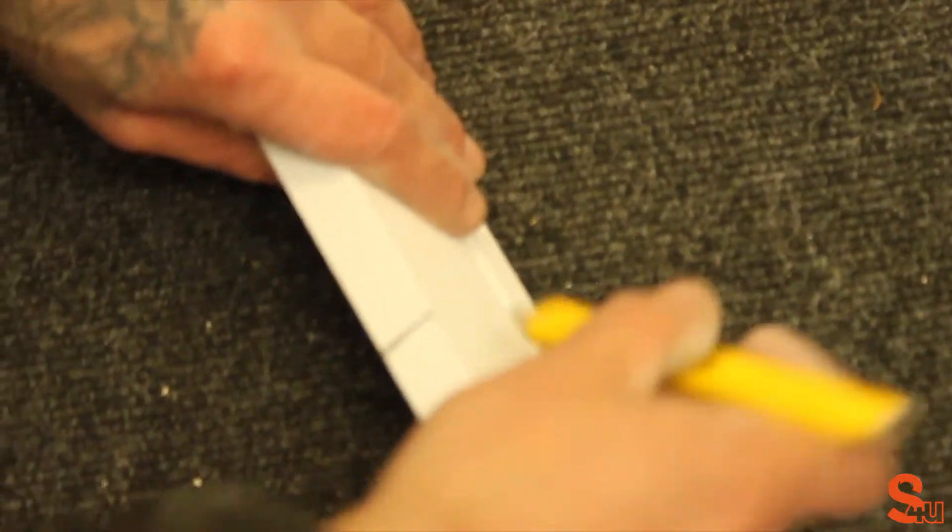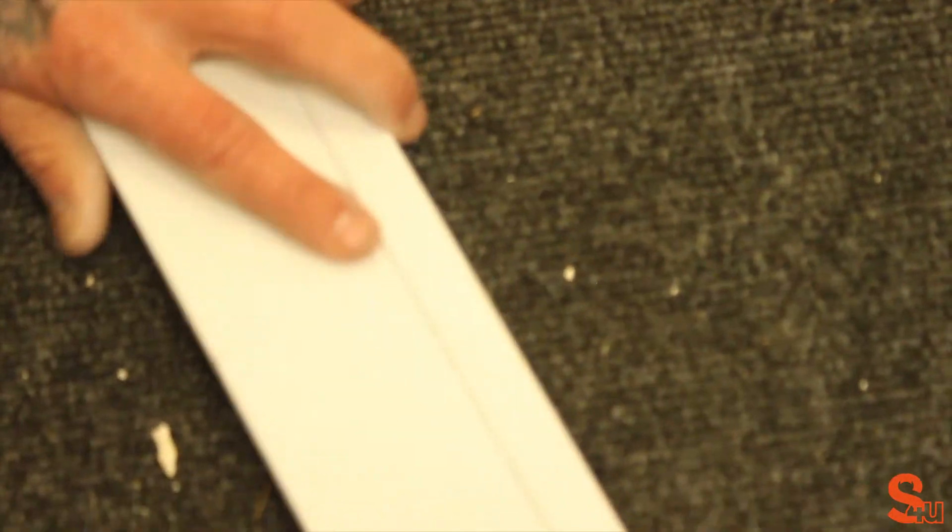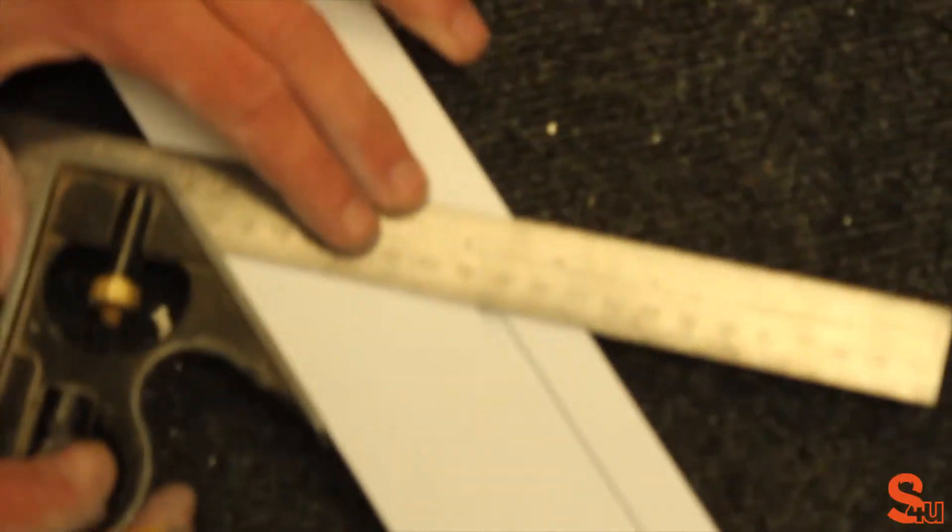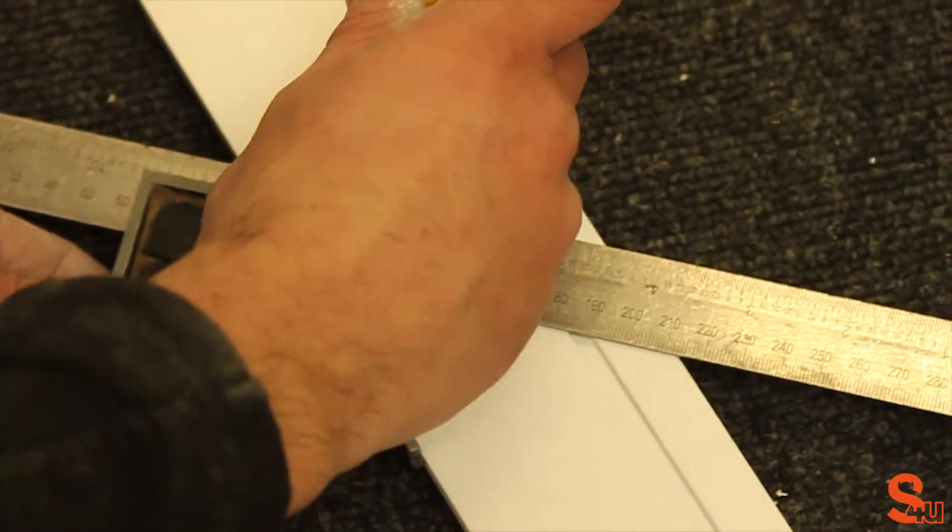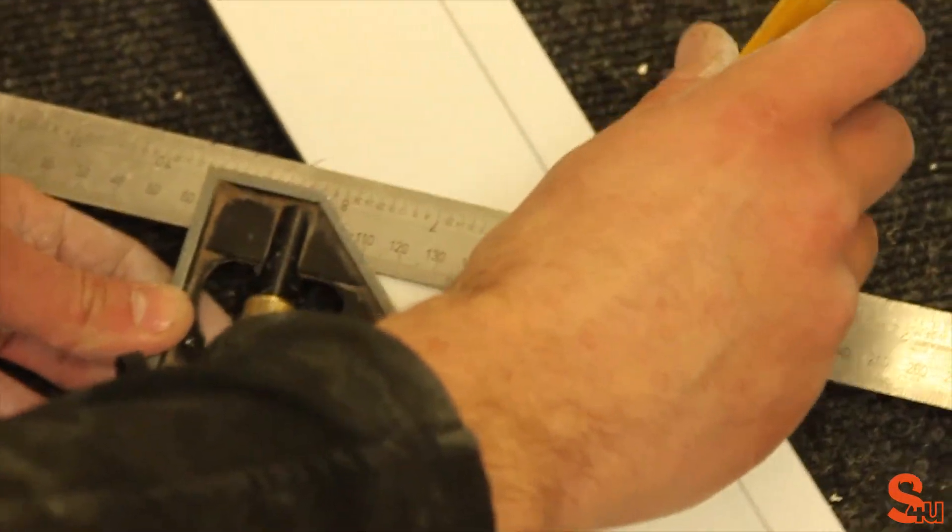Here we extend the line. Then we plot our 45 degree angle using the set square. We plot that in the direction that we need to make the cut.